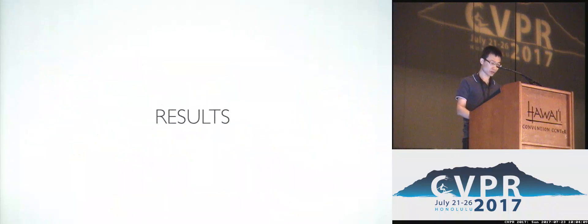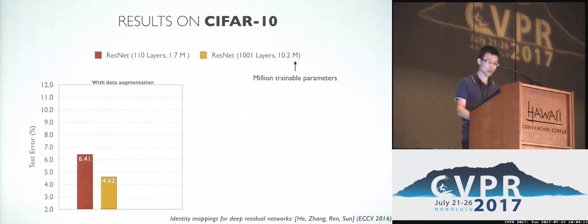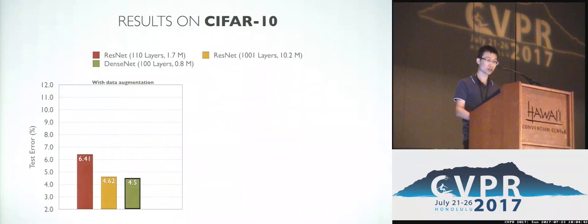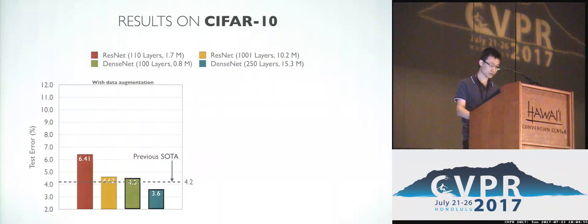Let's take a look at how DenseNet performs in practice. We first run DenseNet on CIFAR-10 dataset, which is a classification dataset with 10 classes. Here are the results of ResNet. The 110-layer ResNet gets 6.4% test error on this dataset, and the 1000-layer ResNet got 4.62% test error. We train a small DenseNet with 100 layers and only 0.8 million parameters. We were able to get comparable performance as the 1000-layer ResNet, but using about one-tenth of this number of parameters. We train a larger DenseNet. It gives significantly lower test error than previous state-of-the-art.